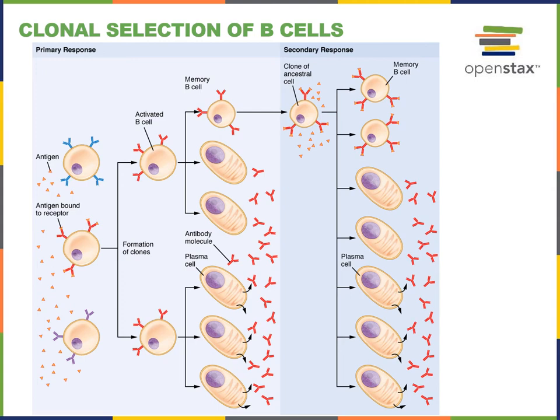Here we see the formation of clones where the activated B cell divides, making more B cells that have the red antibody. Some of those cells will be the memory B cells that are long-lived B cells, providing immunological memory in case we encounter the same pathogen again in the future. But many of the B cells that are formed will be the effector B cells known as the plasma cells. These effector B cells secrete antibodies.